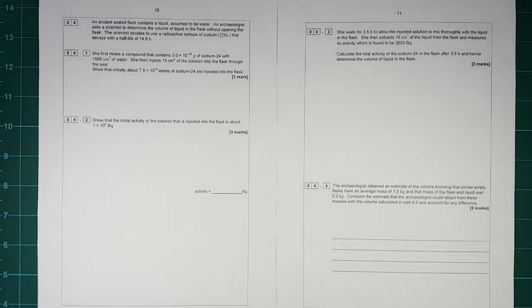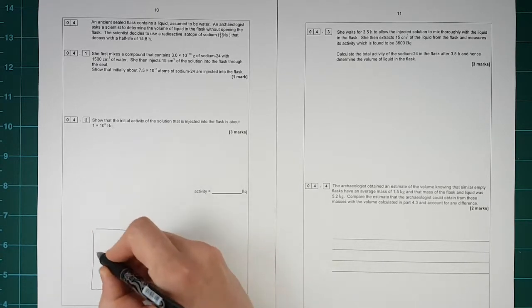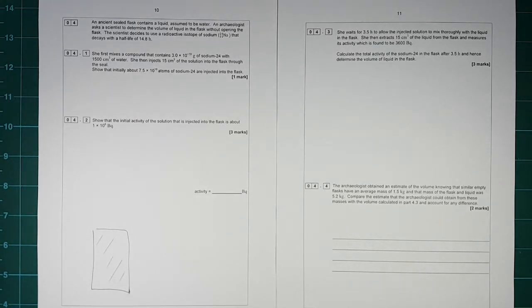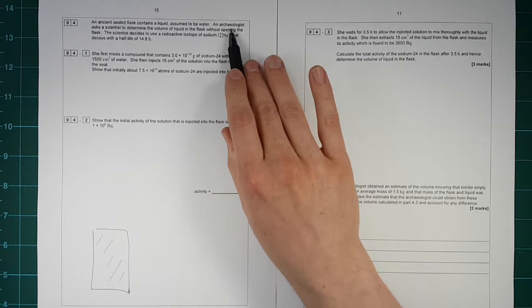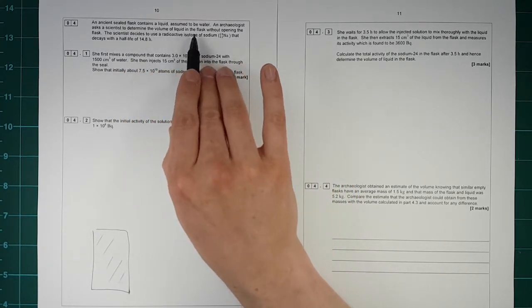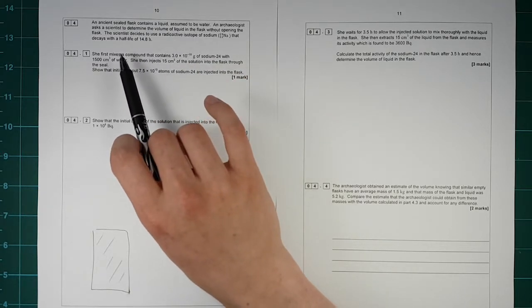Question four. There's been a couple of people asking about this question so I'm going to go through it in quite a bit of detail. Students I think find questions like these rather hard. So an ancient sealed flask contains a liquid which is assumed to be water. So there we have a flask and inside is some liquid. An archaeologist asks a scientist to determine the volume of liquid in the flask without opening the flask.